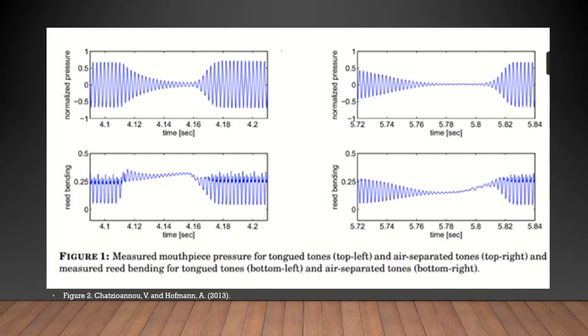In Figure 2, the two graphs on the left show measured mouthpiece pressure and reed oscillations for tongue-separated notes. The graphs on the right show the mouthpiece pressure and reed oscillations for air-separated tones. It can be observed in the bottom left graph that during the tongue-separated tones, the oscillations of the reed are not completely stopped and the same holds true for the mouthpiece pressure. This implies that mouthpiece pressure and reed oscillation are directly related to one another. This also proves that the tongue is not stopping the sound but rather suppressing the reed vibrations which dampen the sound.